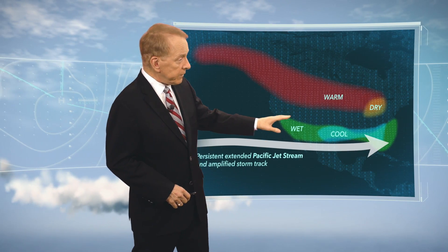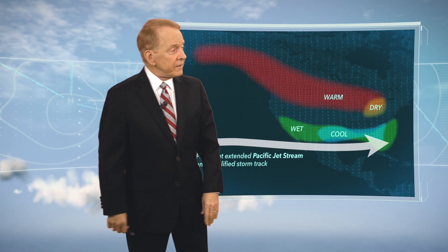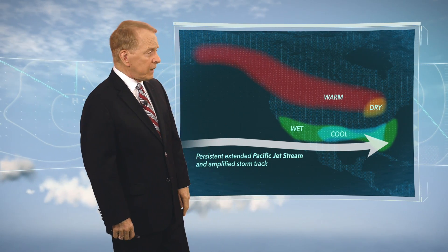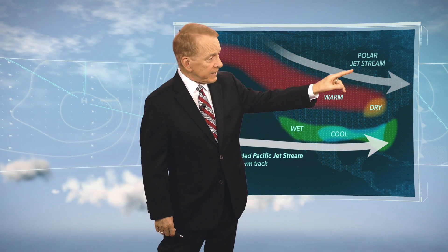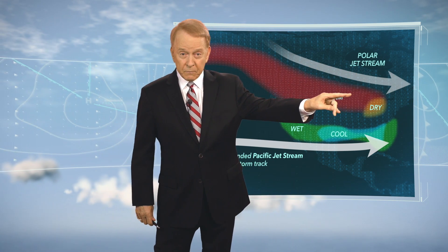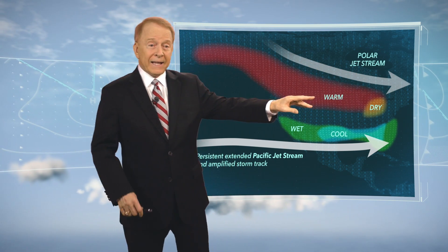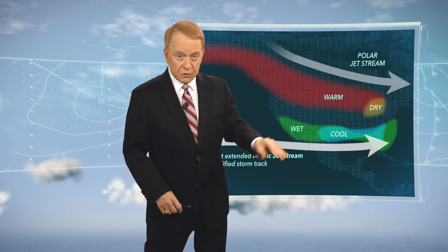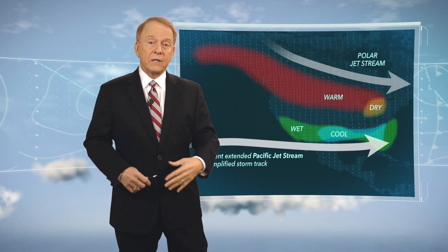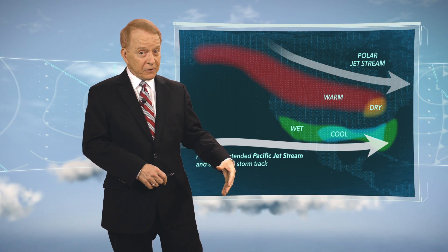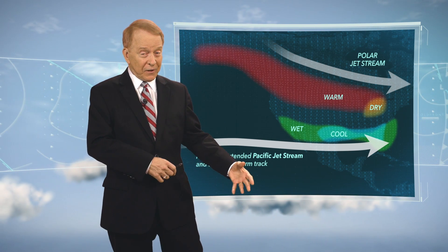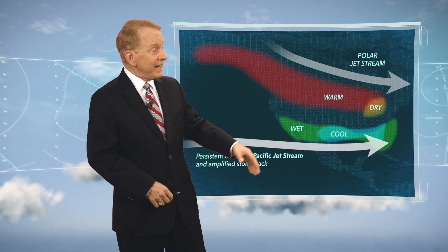There she goes right there, one right there, and then probably just as important is this one right up here in Canada, in the northeastern part of the country. That flow there, produced by El Niño conditions — that upper air flow is produced by the El Niño conditions that started out on the surface.